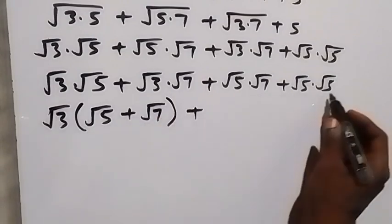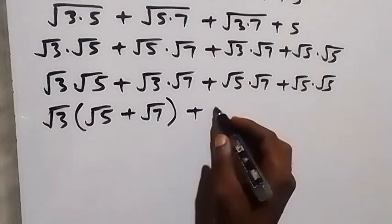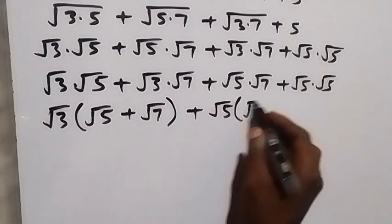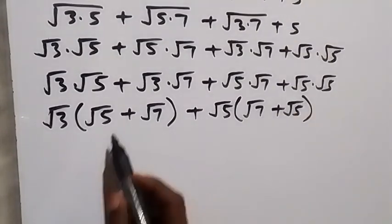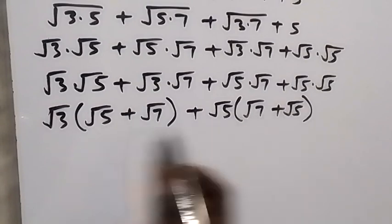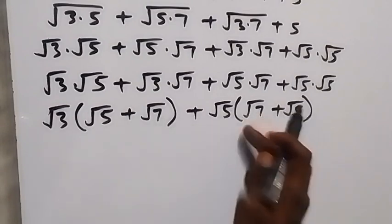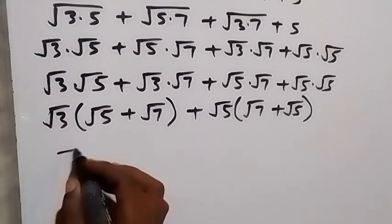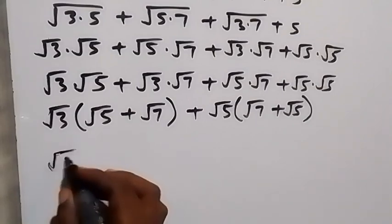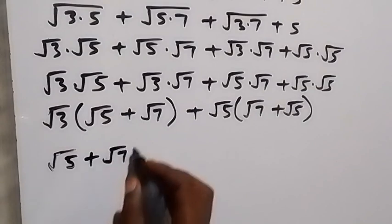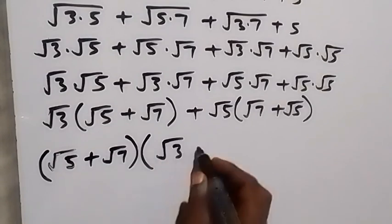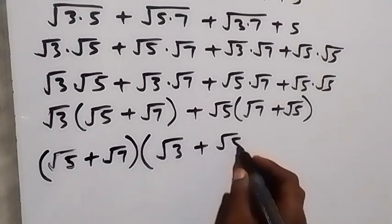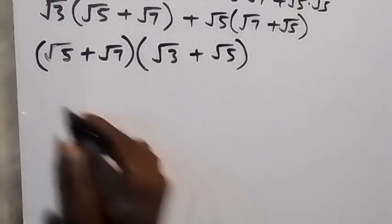What is common in the second group is √5. Taking √5 out, we have √7 plus √5 here. Looking at this, we have the same expression inside the bracket. Taking (√5 + √7) as common and factoring it out, what is left is √3 then plus √5. So we have the numerator simplified as (√5 + √7)(√3 + √5).